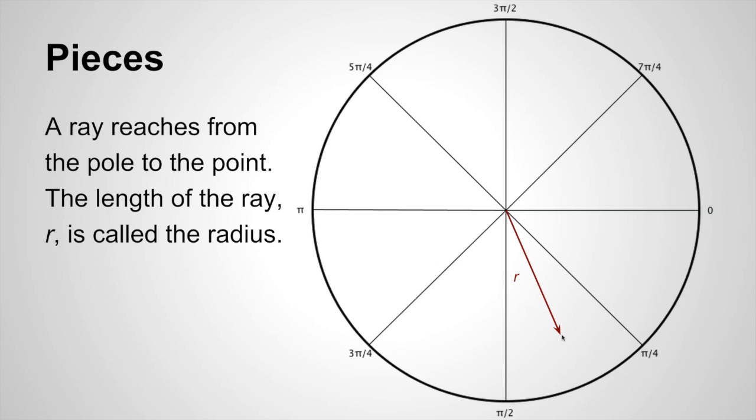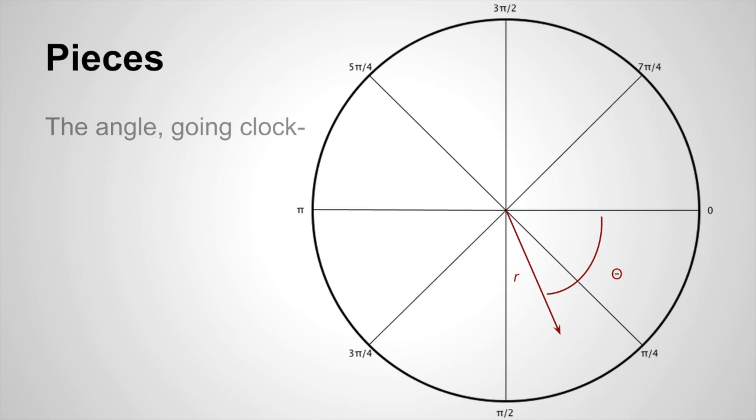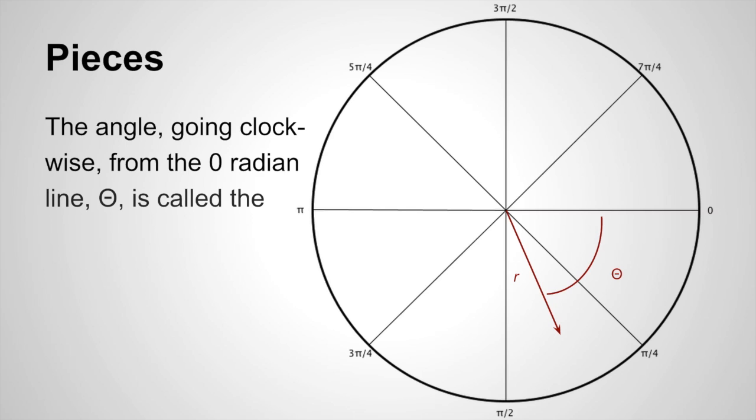The other thing we need to know is the angle from zero going clockwise to the ray. It's called theta, and that's the polar angle of this coordinate.